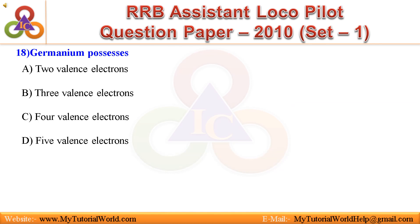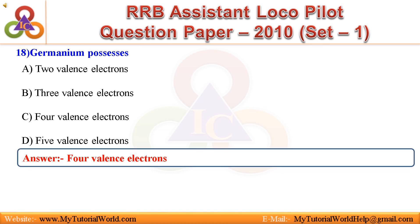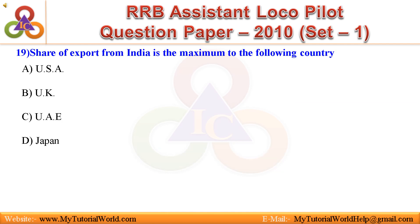Question 18: Germanium possesses: A. Two-valence electrons, B. Three-valence electrons, C. Four-valence electrons, D. Five-valence electrons. Answer is Four-valence electrons.